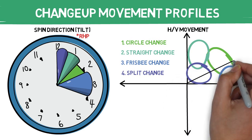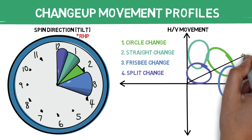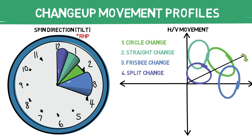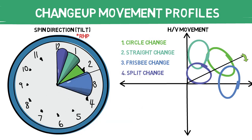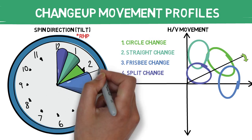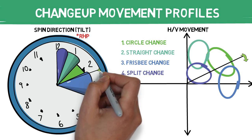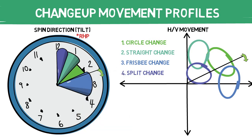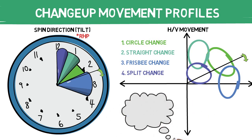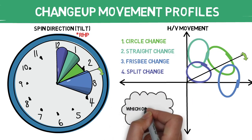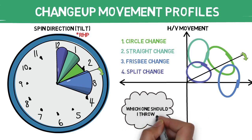In my personal experience, the nastier wipeout changeups have all had one thing in common — they fall below a certain line on the movement profile chart, which equates to about below a 2:15 tilt. I've seen good changeups all across the board, but the best ones have always hit this mark. Now let's check out each of these pitch types a bit more in depth.